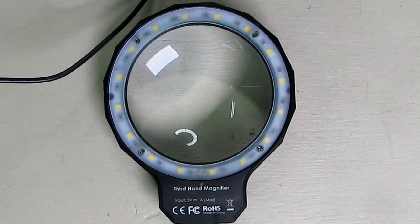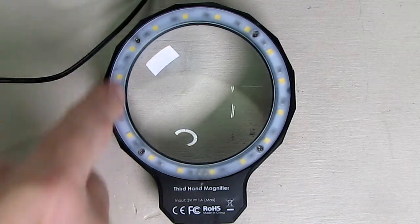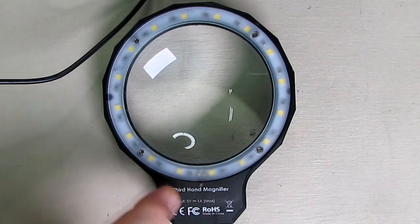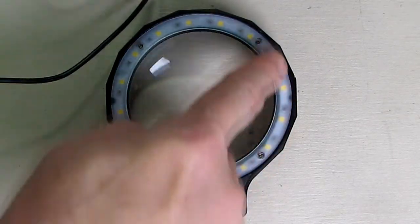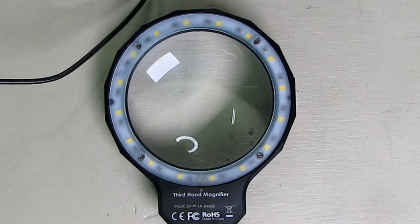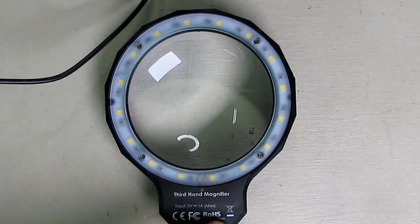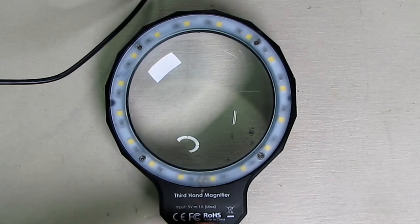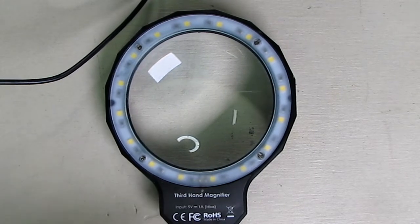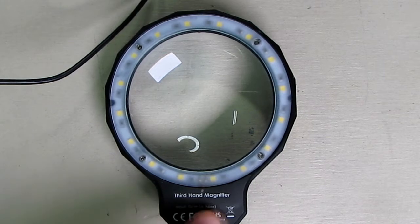So here's the close-up of the lens and the LEDs. You can see the 16 LEDs and they have a diffuser built in right there. That really works quite nicely. You can see the certifications on it, ROHS and the CEFC, so that shows that it's a safe product and it tells you what the input is, 5 volts.